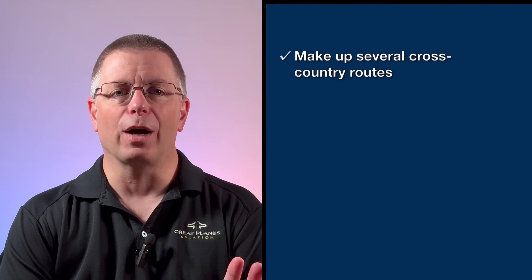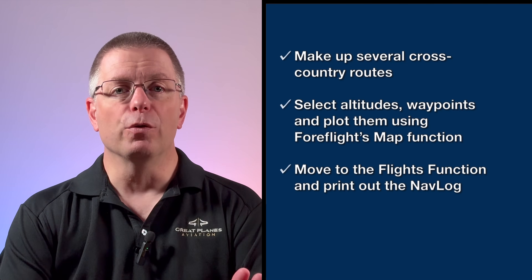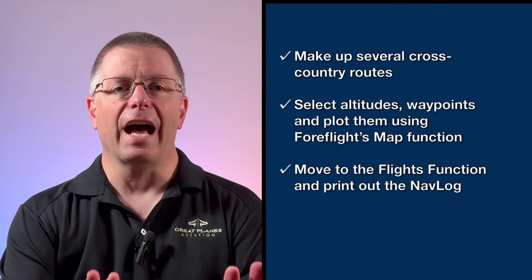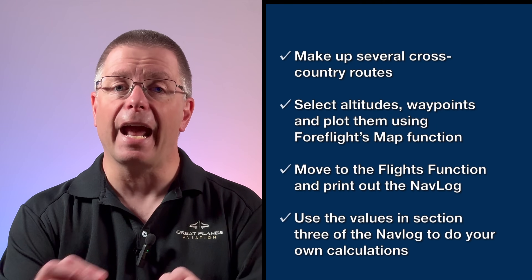You can use this enhanced navigation log in a couple of different ways. First, you can use it as a training tool. Make up several cross-country routes, select an altitude, select your waypoints, and plot them out using the ForeFlight map function. Then move your creation into the Flights tool and print out the nav log. Use the altimeter settings, winds, and temperatures from the nav log to do the performance and navigation calculations by hand and compare them to what ForeFlight came up with. The results might not be exactly the same because you'll be doing estimations, rounding, and interpolation while ForeFlight will be more specific, but they should be pretty close. If they are, congratulate yourself and make up a new scenario. If your results are significantly different, try to figure out why and ask your instructor for help. This is great practice and, in a nerdy way, it's kind of fun.